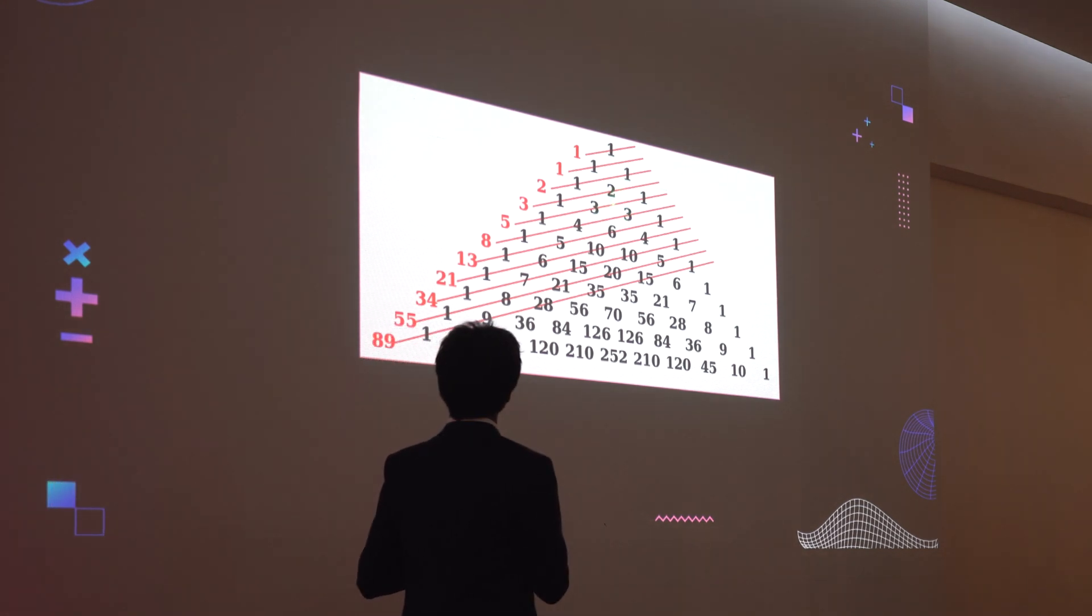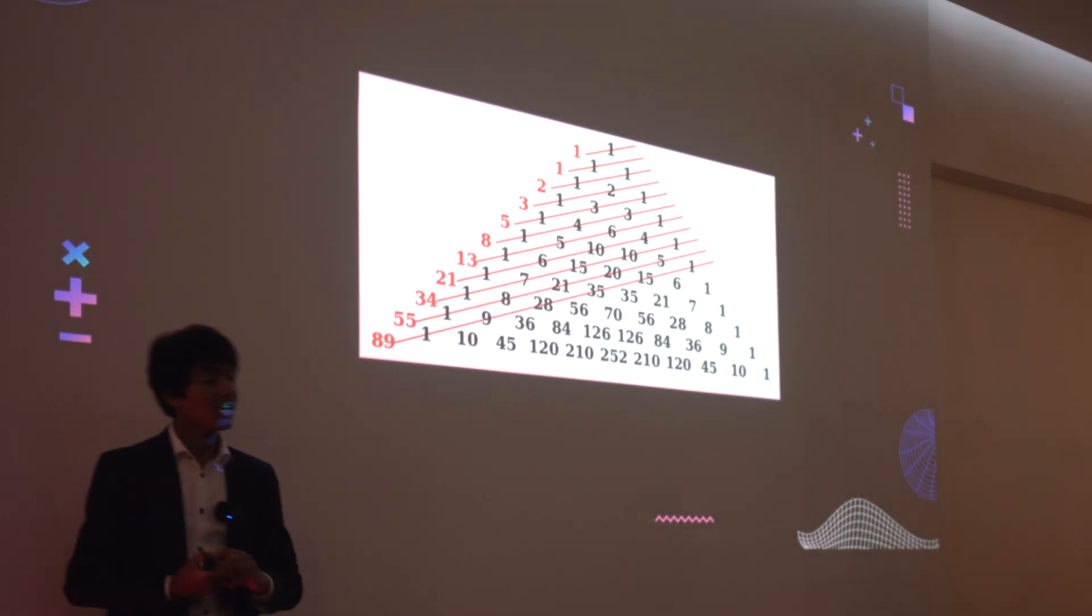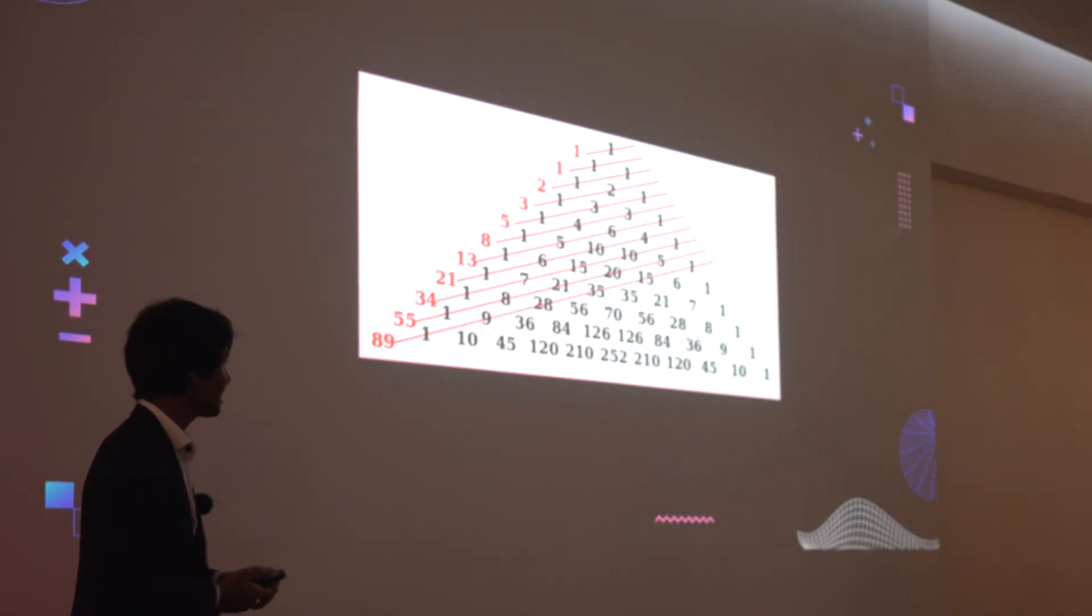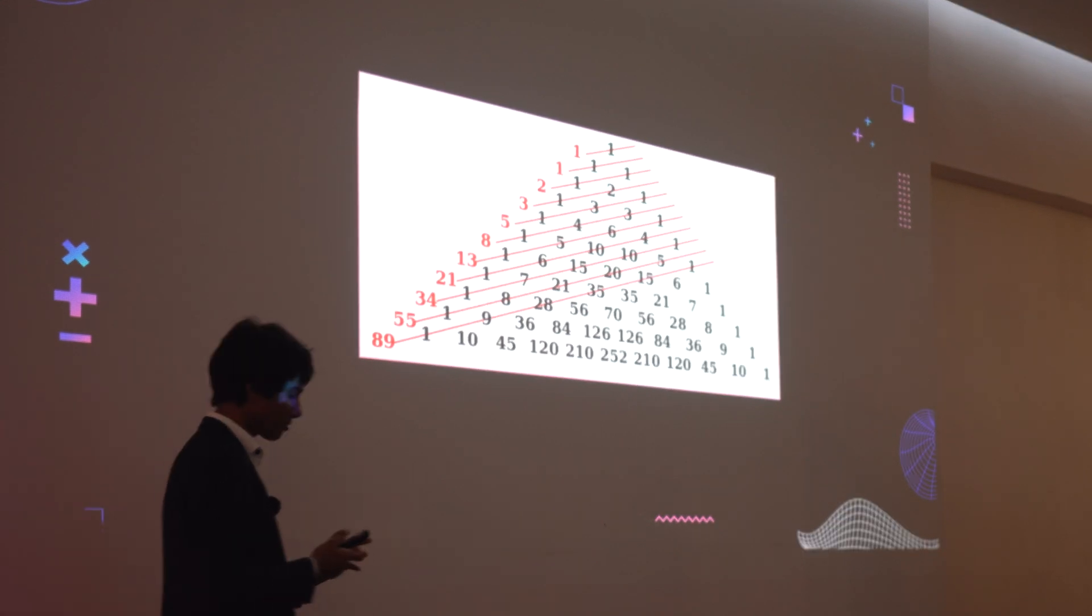Take the two here, for example, it's the sum of the two numbers right above it, which is exactly what Fibonacci's law in his sequence states that the next term is the sum of the two previous terms.